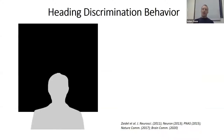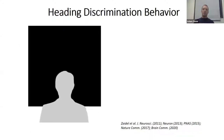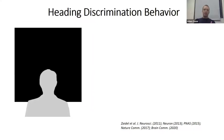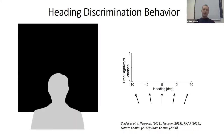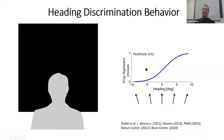One of the basic experiments we run is heading discrimination. We move a person on the platform forward-right or forward-left with slight discrepancies, and the person indicates whether their motion was to the right or left. On the x-axis is the stimulus (zero is straight ahead, positive values are right, negative are left), and on the y-axis is the proportion of rightward choices. For a 10-degree heading it's easy — almost always choosing right — and as we approach zero we start making more random guesses.